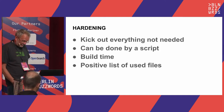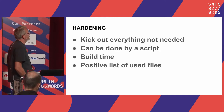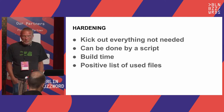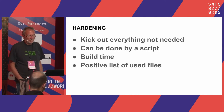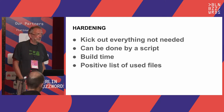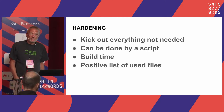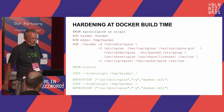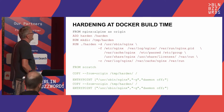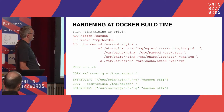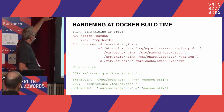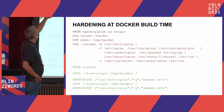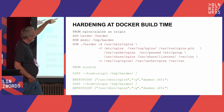The answer, from an open source project with a similar problem, was: just do the usual hardening. Kick out everything that is not needed. How can we know what's not needed? It can be done by a script at build time. The first answer is: use a positive list of files.